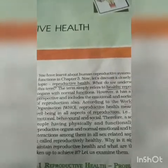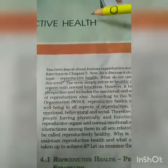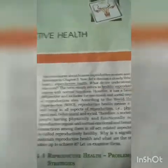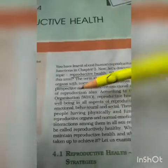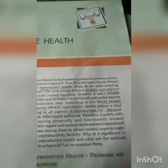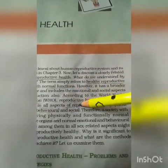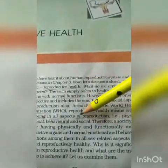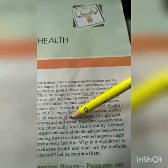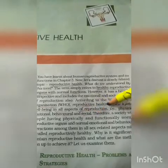Other aspects also come under Reproductive Health — emotional and social aspects of reproduction are also included. According to the World Health Organization, Reproductive Health means total well-being in all aspects of reproduction: physically, emotionally, behaviorally, and socially.